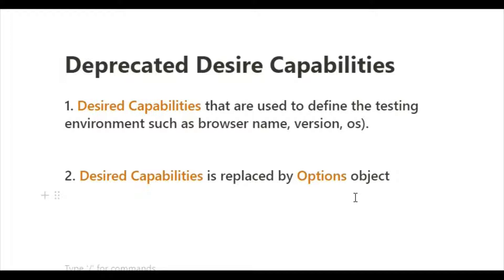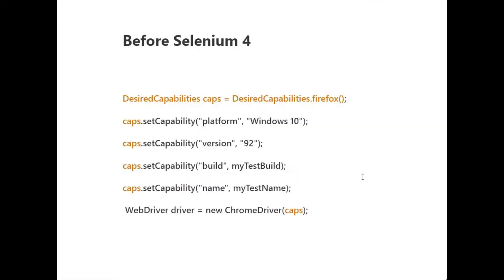Before Selenium 4 we used Desired Capabilities, but now they have introduced another term. The Desired Capabilities are replaced by the Options object, which I'll explain going forward.